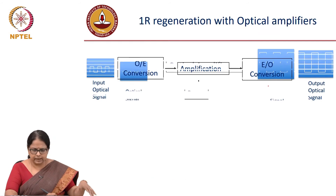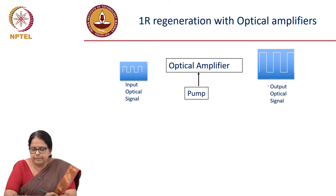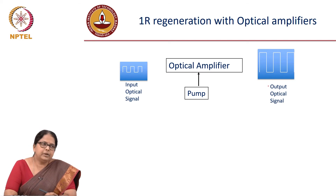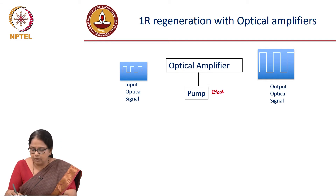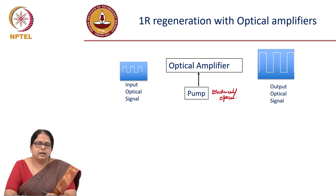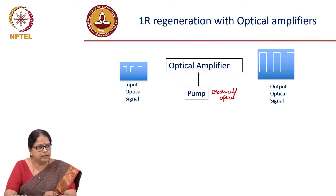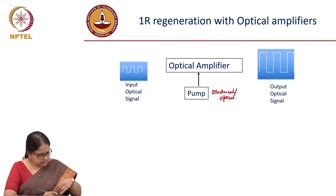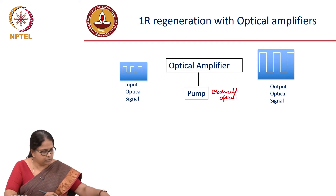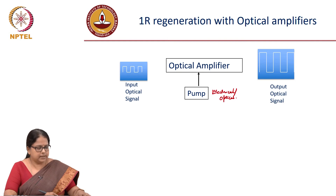Thankfully, people came up with what is called an optical amplifier, where you send in your input optical signal and pump the optical amplifier — this pump could be electrical or optical — and your output signal comes out amplified without having to convert from optical to electrical domain and back. This was probably one of the major breakthroughs as far as fiber optic communication technology is concerned.